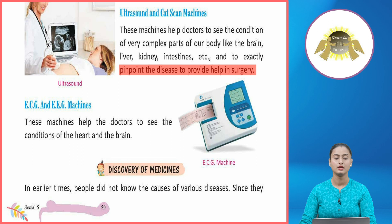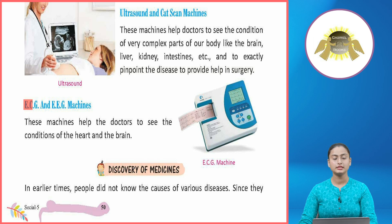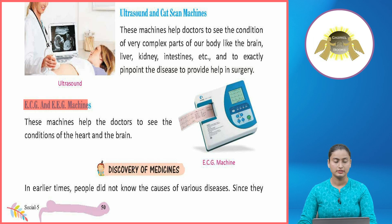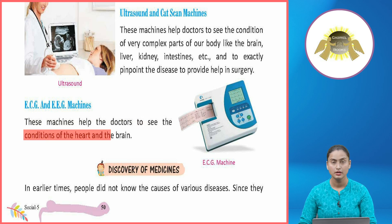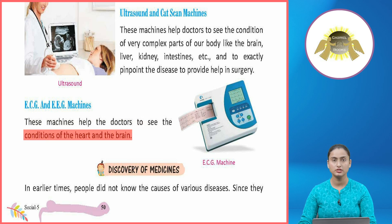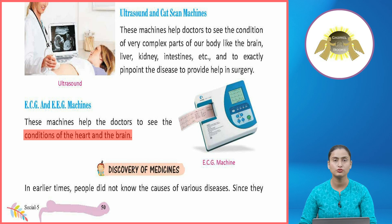ECG and EEG Machines: These machines help doctors to see the conditions of the heart and the brain. ECG and EEG machines are made to study the heart and the brain.